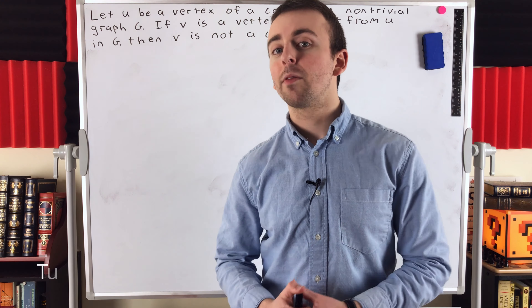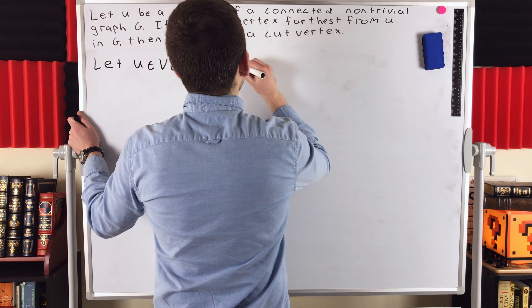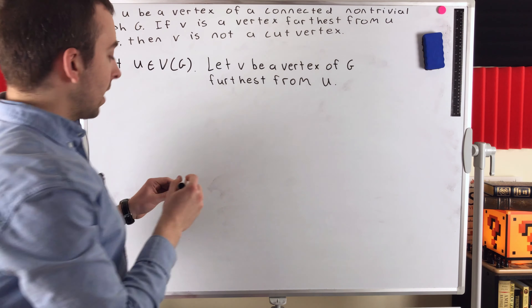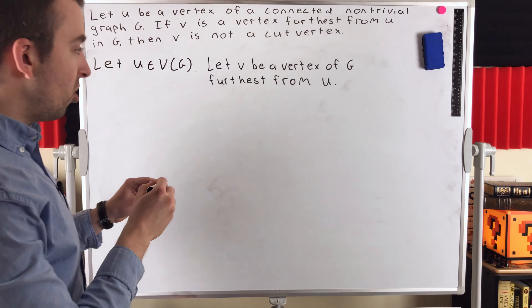We assume the hypothesis of the theorem: we've got a non-trivial connected graph g. Let u be an element of the vertex set of g — just any arbitrary vertex. Now we also want that vertex v that is furthest away from u. So let v be a vertex of g furthest from u, which means v is a vertex of greatest distance from u.